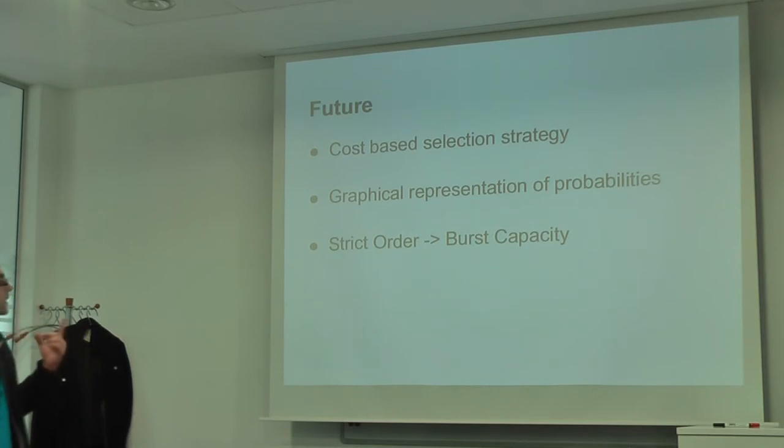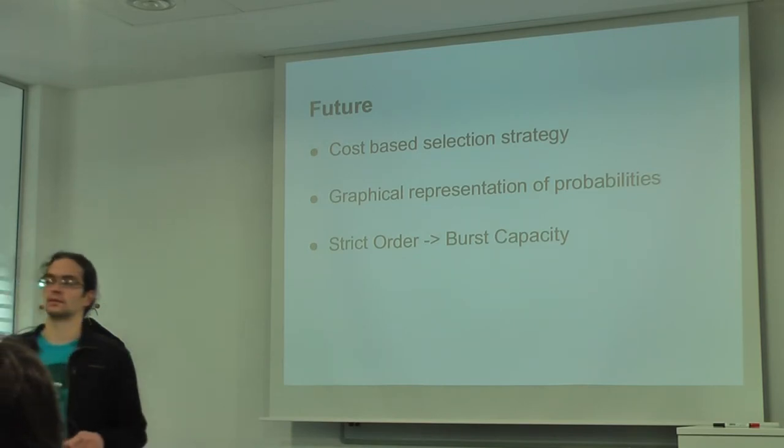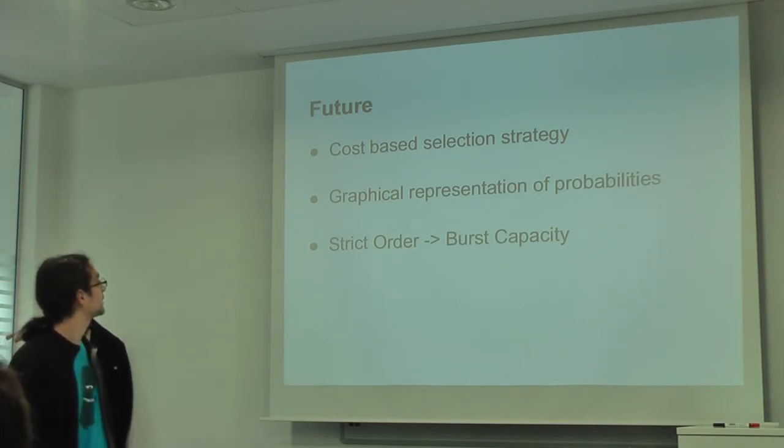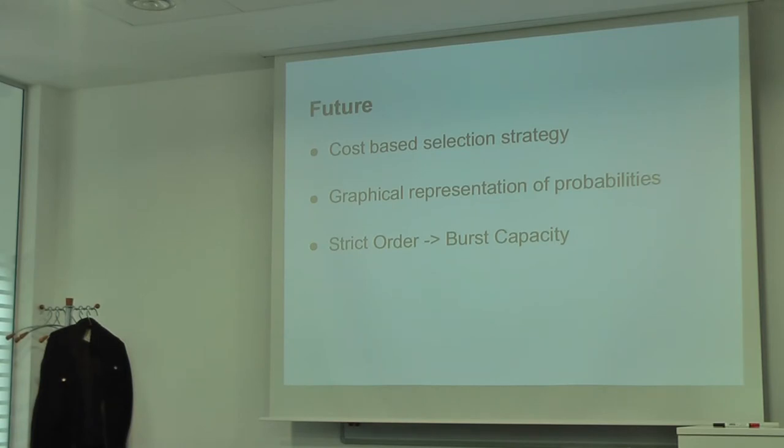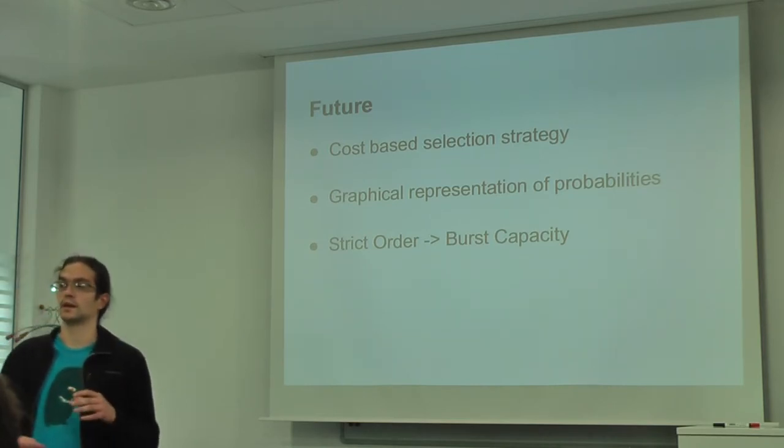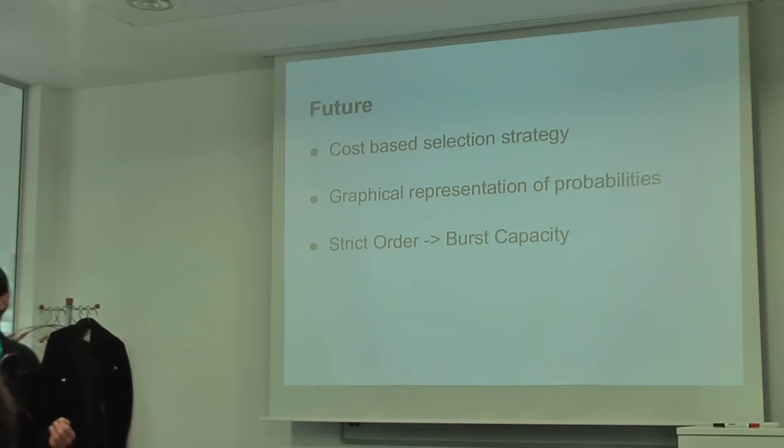And the graphical representation is at the provider priority group's level. So for each priority group you will have the probability distribution. And we also discussed to somewhat reflect on the strict order to a burst capacity, which means that we won't allow users to define multiple priority groups, just one. Because it will simplify things while most of the use cases, 95% of the use cases, will be handled with this one. Because many users want to use first their private clouds. And when they max out their private clouds, they want to use public clouds as a fallback.